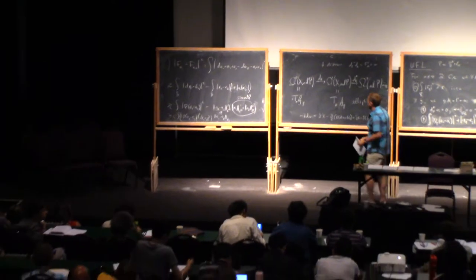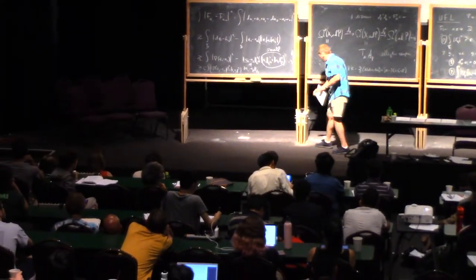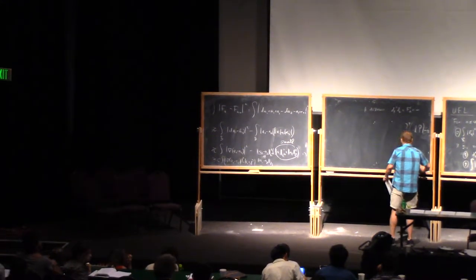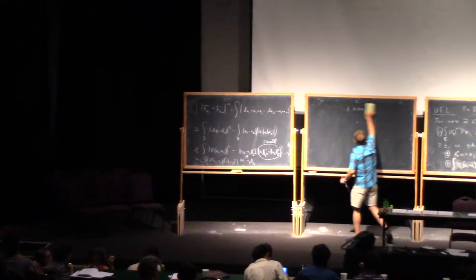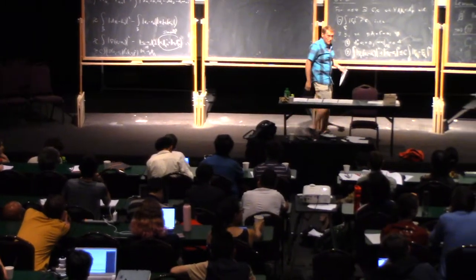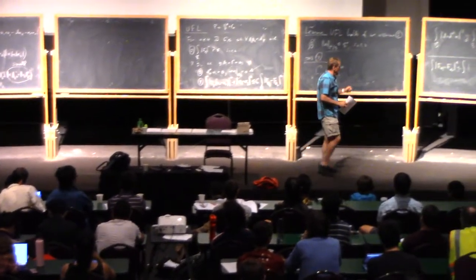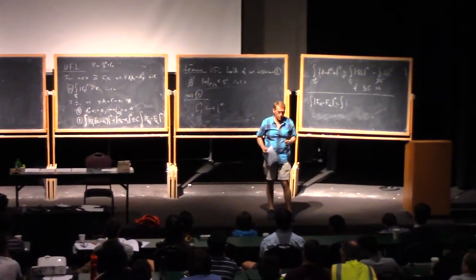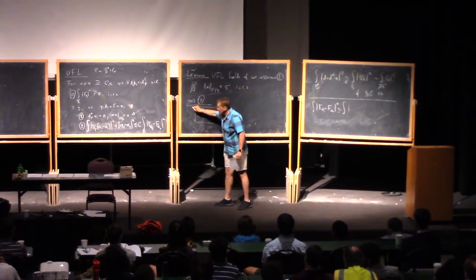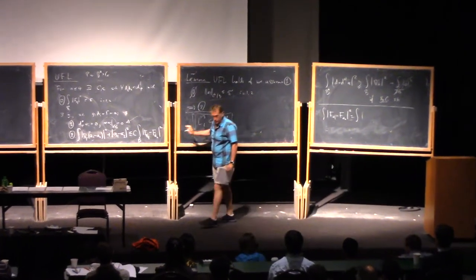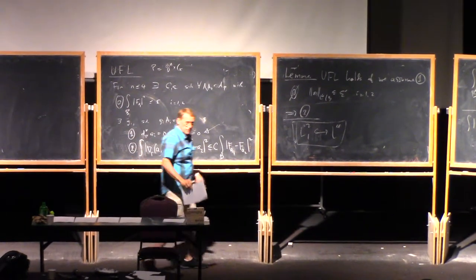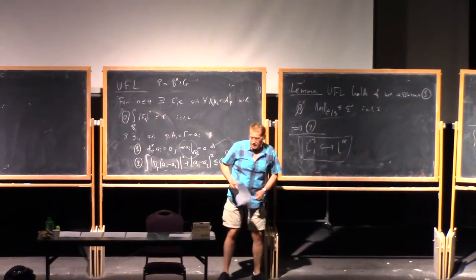And one nice corollary of this, I could have used stronger norms. I couldn't have used weaker norms than dimension four. The key thing is that I was using this bound, which is true up until dimension four, and then past dimension four, it just doesn't work, right?